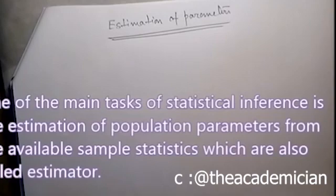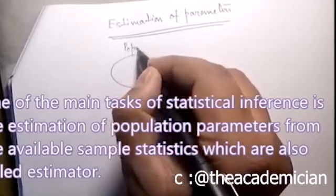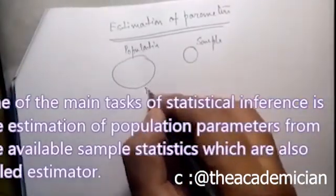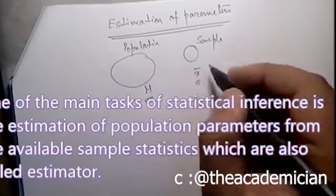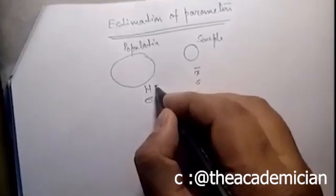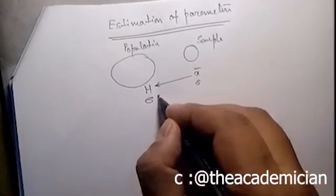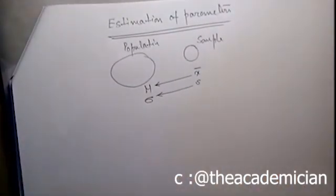Estimation of parameters: one of the main tasks of statistical inference is the estimation of population parameters from the available sample statistics, which are also called estimators. Suppose mu and sigma are the population parameters. The sample mean and standard deviation are the statistics. With the sample mean we can estimate the population mean, and with the sample standard deviation we can estimate the population standard deviation.